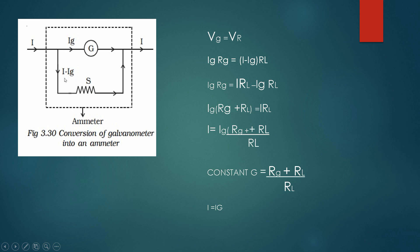When we are connecting a low resistance parallel to this galvanometer, then the voltage drop across galvanometer will equal the voltage drop across this resistance. So galvanometer voltage equals low resistance voltage. As per Ohm's law, we know that V equals IR. So galvanometer current into resistance of galvanometer equals the low resistance current, I minus IG into RL, the low resistance.